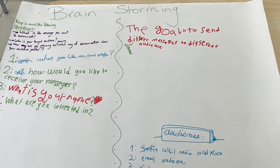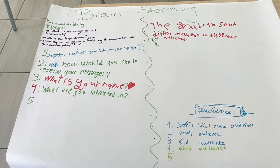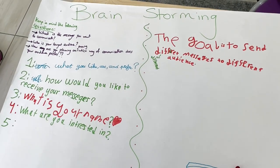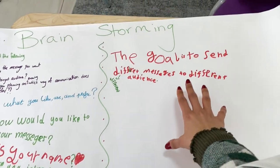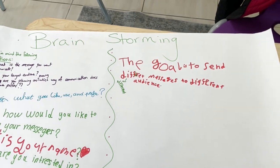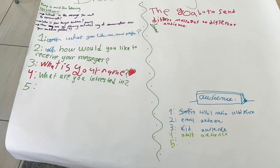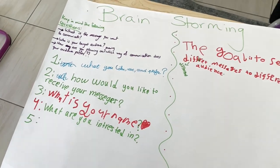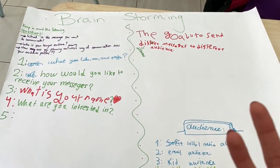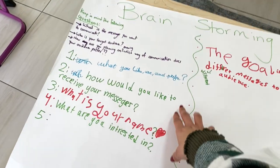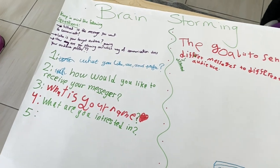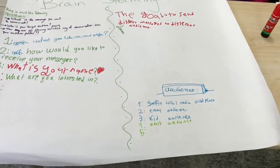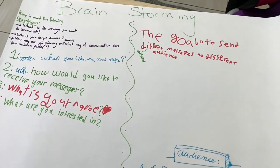One student suggested something great, so let me show you what they did today. They wanted to make connections between data handling and messages — their goal was to send different messages to different audiences in the school. To get to know their audience better, they wanted to collect data about teachers and kids. They were trying to narrow down their questions and figure out how to collect the data — but we didn't have enough time to finish, so they'll continue next time.